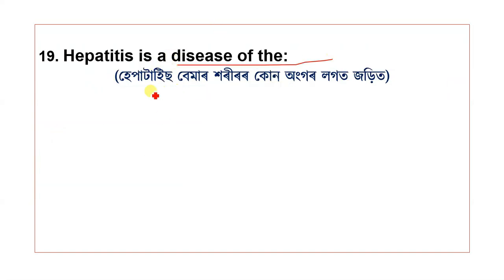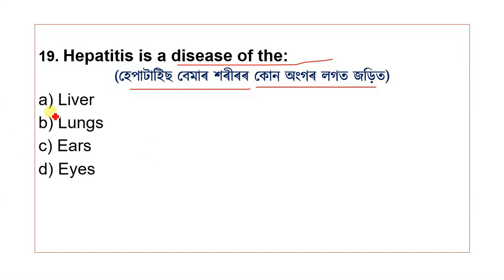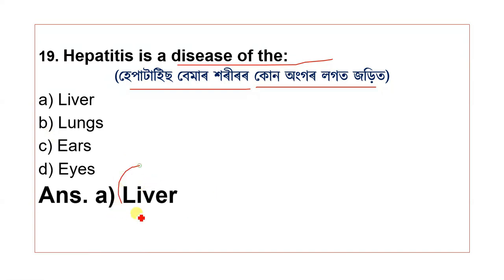Question 19: Hepatitis is a disease of which organ? The options are liver, lungs, ears, and eyes. The correct answer is liver.